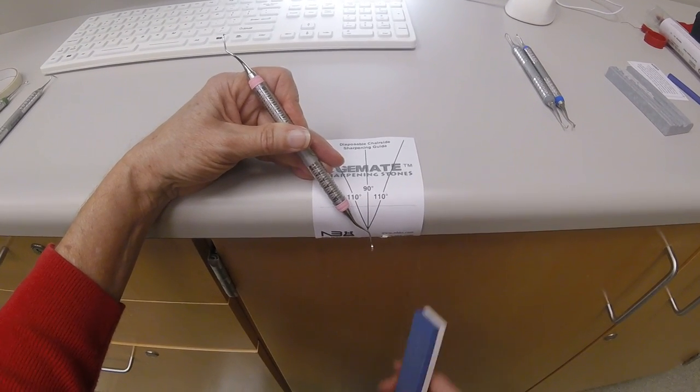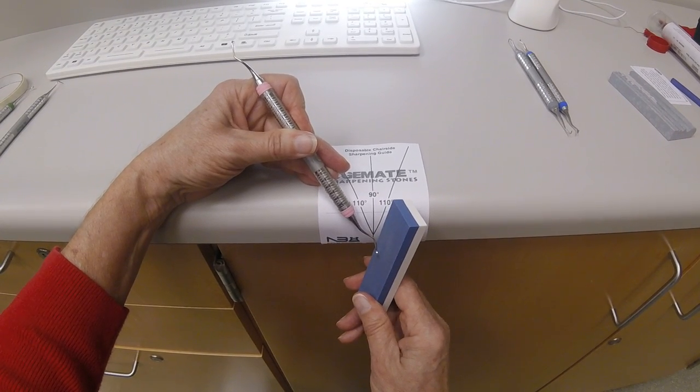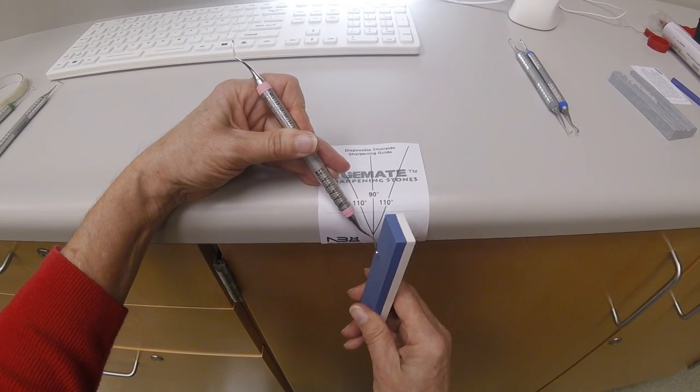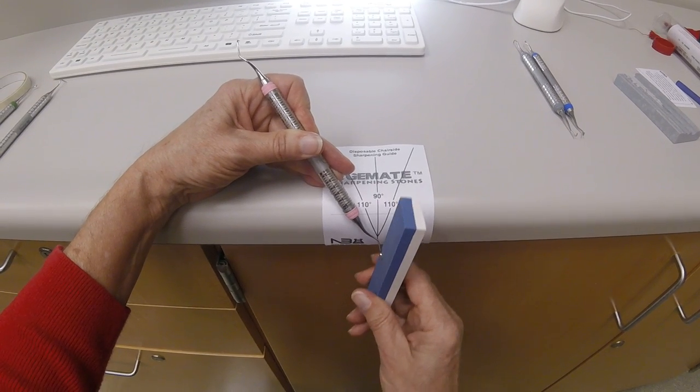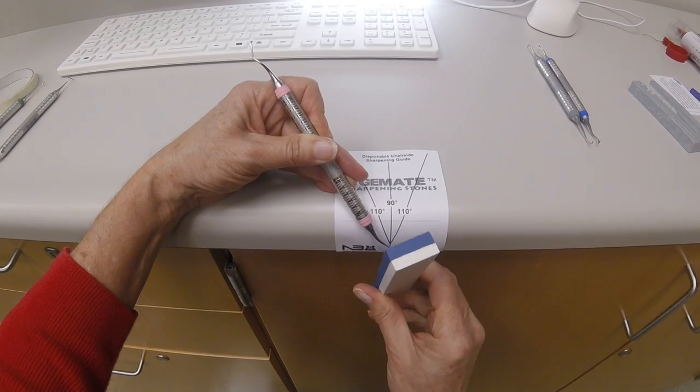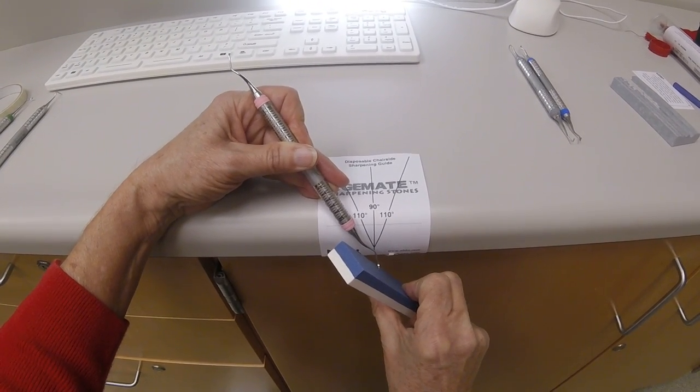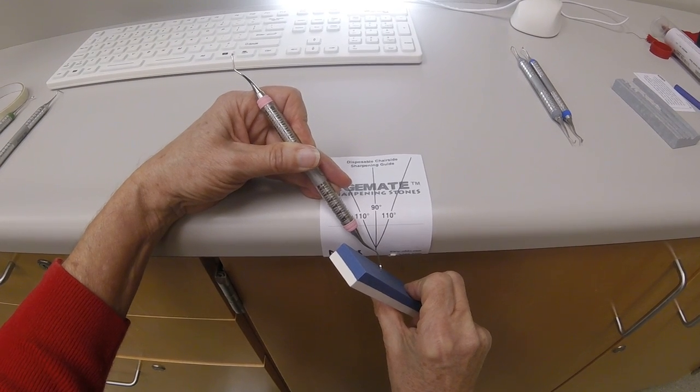When you need to sharpen the toe, start at a 90 degree angle, rock back to 110. Begin the sharpening action on a downstroke, following the contour of the cutting edge until you reach the toe and start to roll the stone around the toe to the opposite side, stopping on a downstroke.